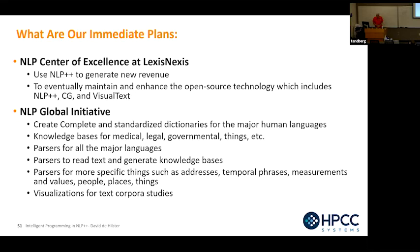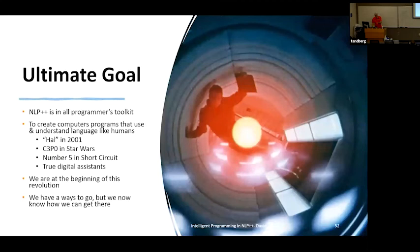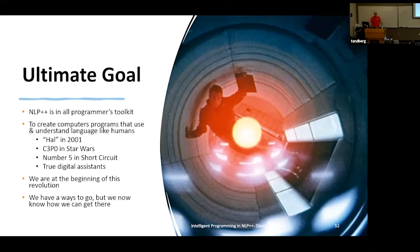Parsers to read text and generate knowledge bases, parsers for specific things such as addresses, temporal phrases, and measurements, and visualizations for text corpora — which one of our students here has inspired. The ultimate goal is to have NLP++ in all programs' toolkits, to create computer programs that use and understand language like humans — like HAL in 2001, C-3PO in Star Wars, Number 5 in Short Circuit. Don't you want your digital system to remind you of things, know who you are, know everything going on? We didn't have a programming language to get there. Now we do. We're at the beginning of this revolution.